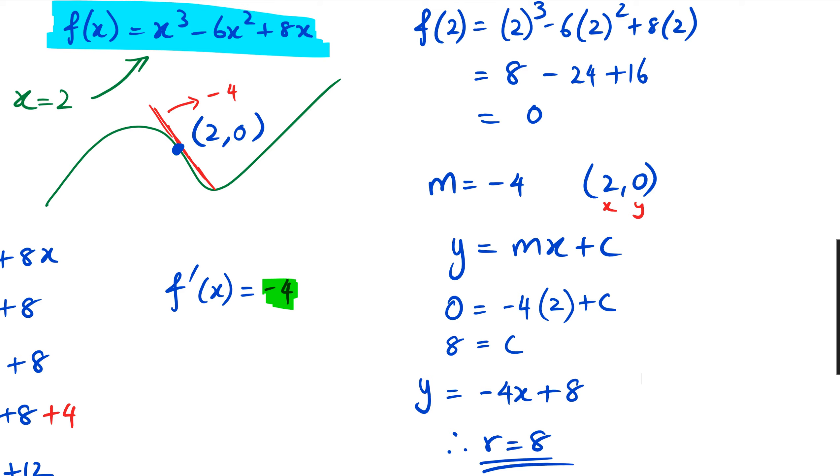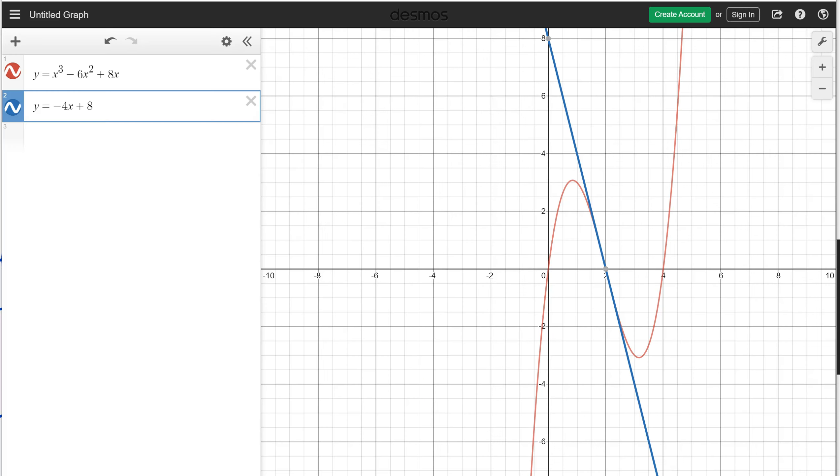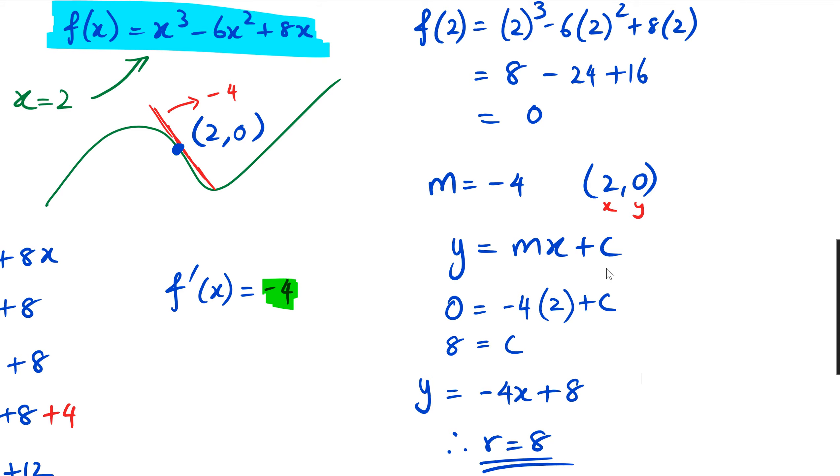So what I've actually done is sketched this on Desmos just to show you guys what it'll look like. As you can see, the red is the cubic, and when I put -4x + 8, you can see that the tangent is at (2, 0) like we predicted. So in this case, the final answer is r = 8.